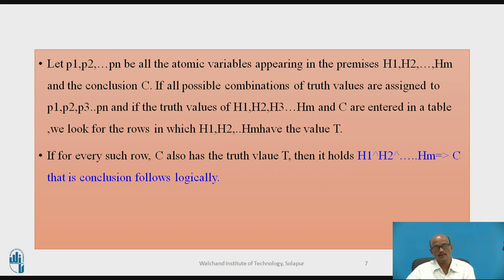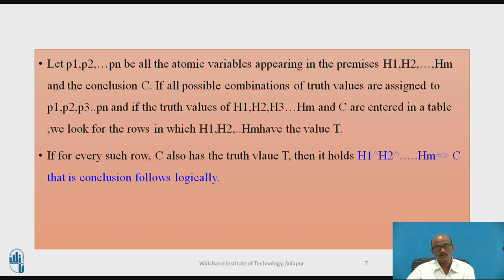Let P1, P2, ..., Pn be all atomic variables appearing in the premises H1 to HM and the conclusion C. Assign all possible combinations of truth values to P1 through Pn and enter the truth values of H1 to HM and C in the table. Look for rows in which H1 through HM all have truth value T. If for every such row C also has value T, then C logically follows from H1 to HM.